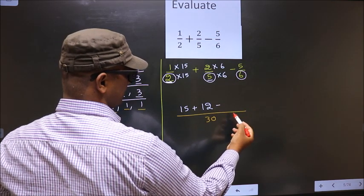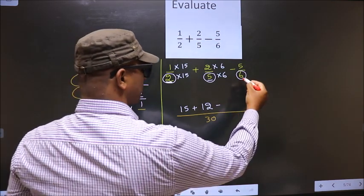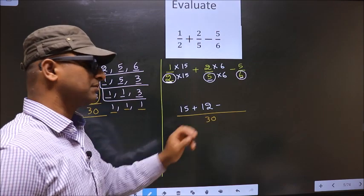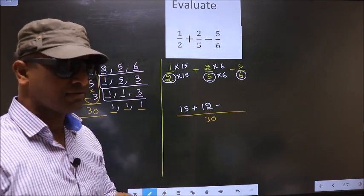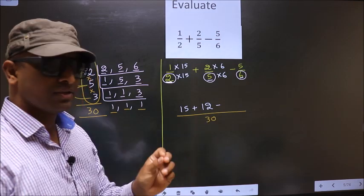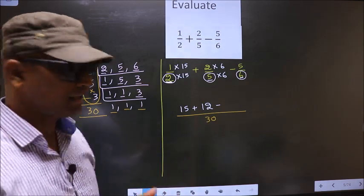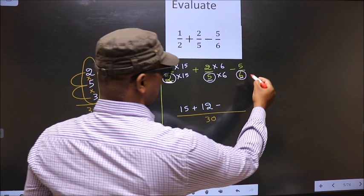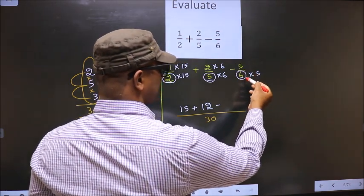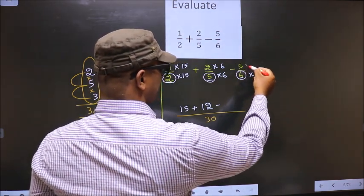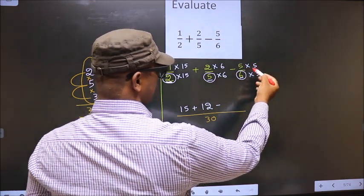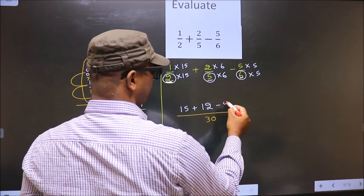Negative symbol as it is. Here we have 6 in the denominator, and here we have 30. Now 6 should change to 30. For that to happen, we should multiply by 5. Whatever number you are multiplying in the denominator, in the numerator also you should multiply by the same number. So we get 5 into 5, which is 25.